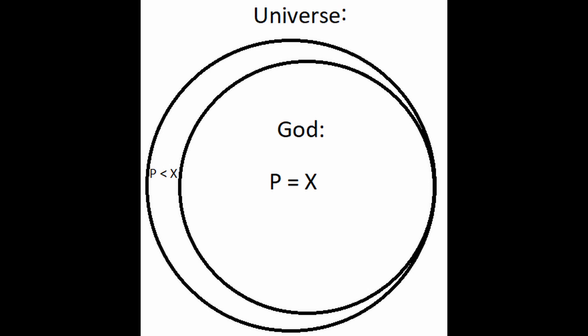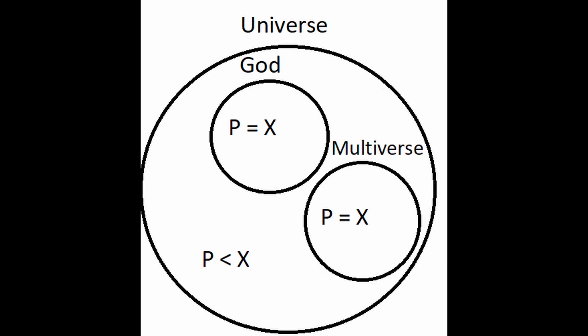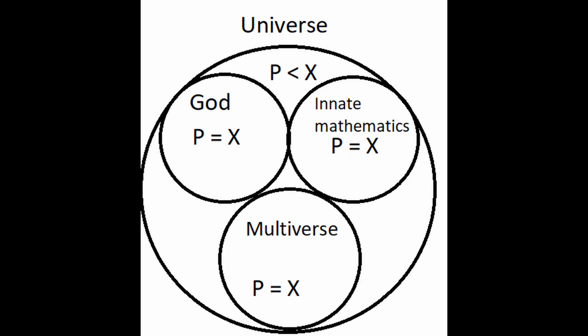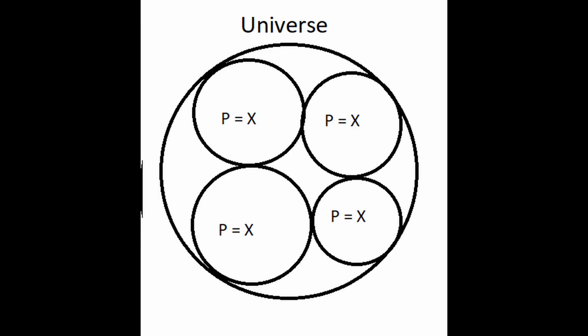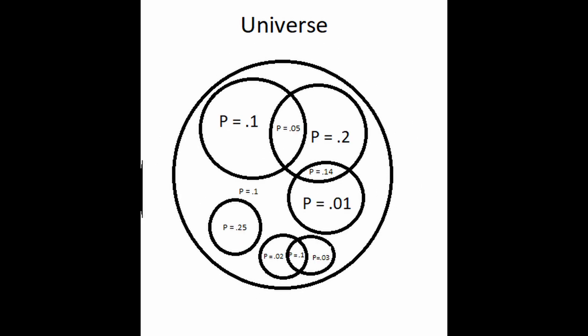But this does not account for all the alternate explanations for a finely tuned universe. Like maybe there's a multiverse, or maybe there's something inherent about our current laws of reality that means they must be the way they are, or maybe we're just the most efficient way to run a universal code on some kind of cosmic simulation machine. And currently there's no real way to estimate the probability of any of these explanations of a finely tuned universe, or how they may relate to one another.